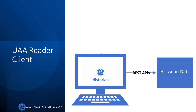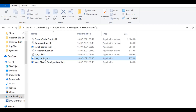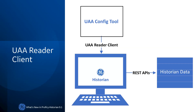UAA Reader Client. To fetch Historian data, previously you had to manually add each user to iHealth Security Groups — only then could users fetch the data. Now this process has been simplified. All you must do is create a UAA Client using the UAA Config tool, available under Program Files > GE Digital > Historian Config. The UAA Client will be automatically added to the iHealth Reader Security Group on the server side. You can then use the client to fetch Historian data using REST APIs.